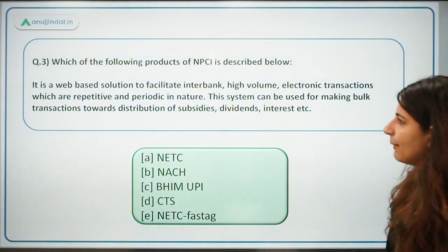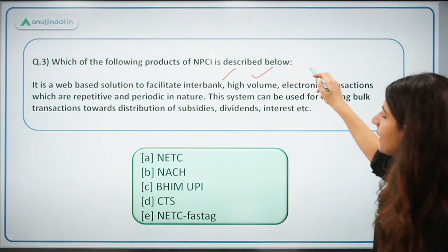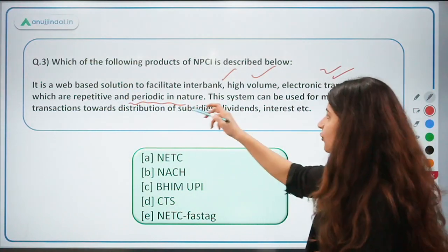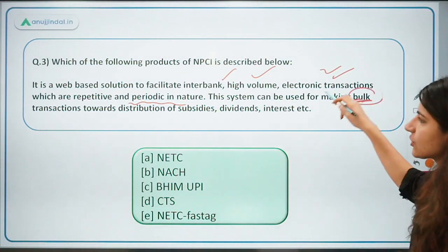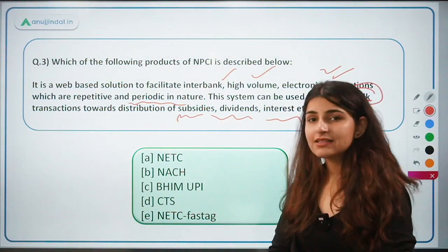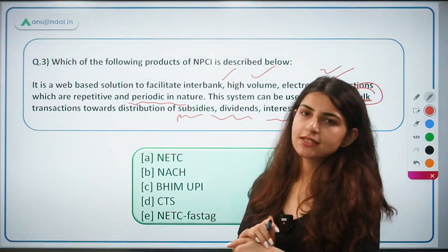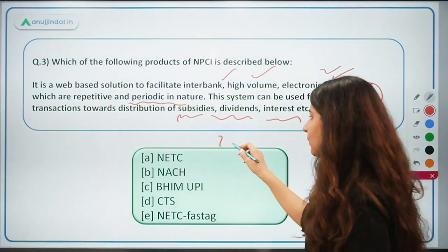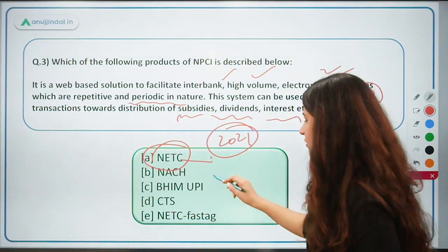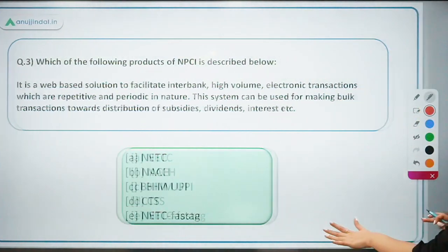Question 3: Which of the following NPCI products is described below? 'It is a web-based solution to facilitate interbank high-volume electronic transactions which are repetitive and periodic in nature. This system can be used for making bulk transactions towards distribution of subsidies, dividends, interest, etc.' This answer is easy — it is NACH. I added this question because in the 2021 Phase 2 exam, there was a question about National Electronic Toll Collection — FASTag.